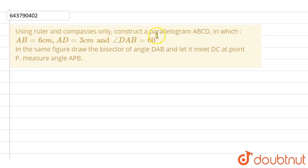ruler and compass only, construct a parallelogram ABCD in which AB is 6 centimeter, AD is 3 centimeter, and angle DAB is 60 degree. In the same figure, draw the bisector of angle DAB and let it meet DC at point P. Measure angle APB.